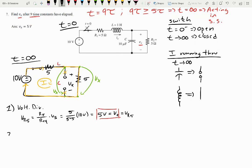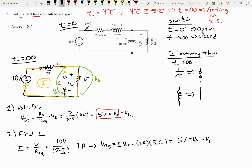Method two, you can find the current. So if you want to do that, current would be equal to V over R equivalent, which would just be 10 volts over 5 plus 5 ohms, so 1 amp. So therefore, the voltage across VR5 would be current through R5, 1 amp times 5 ohms, equals 5 volts for V of X, which is also equal to VR5. And that's the same value that we get up here.